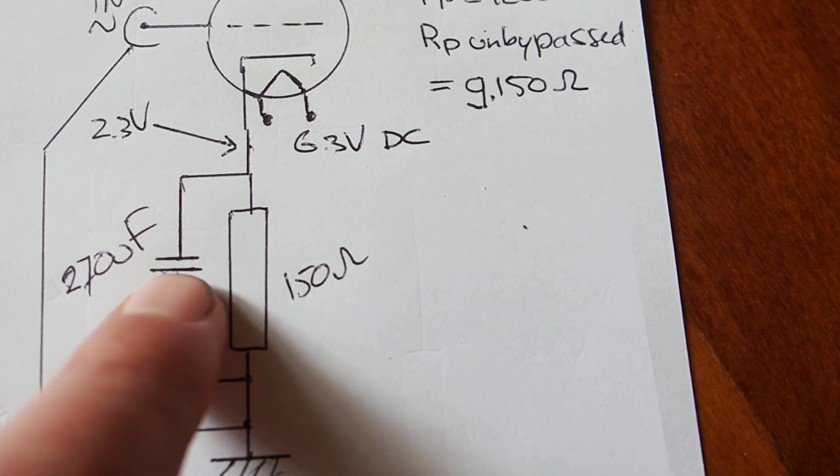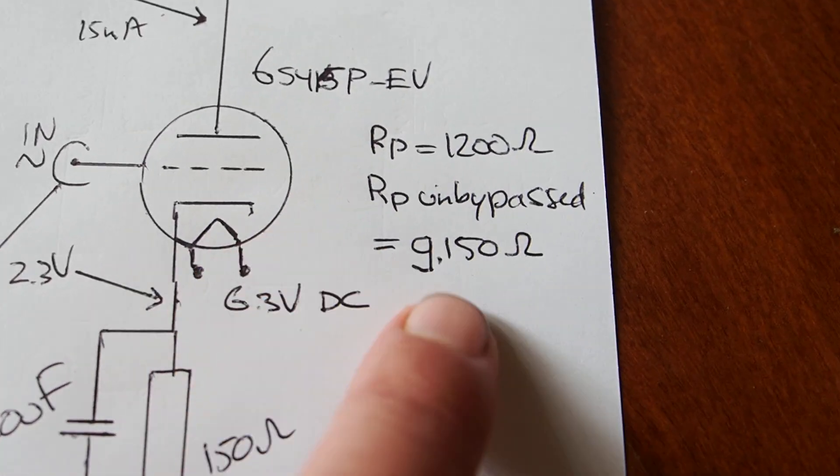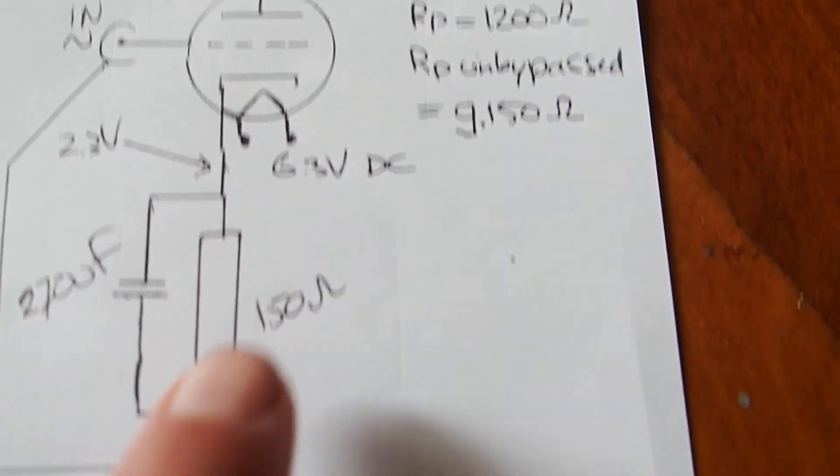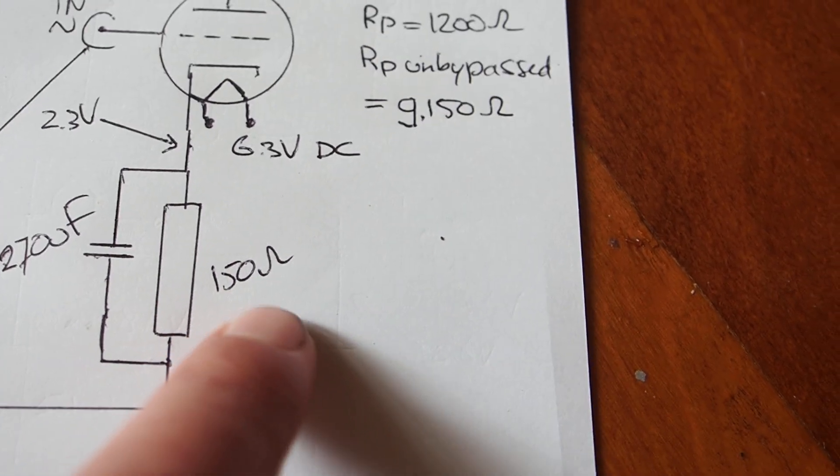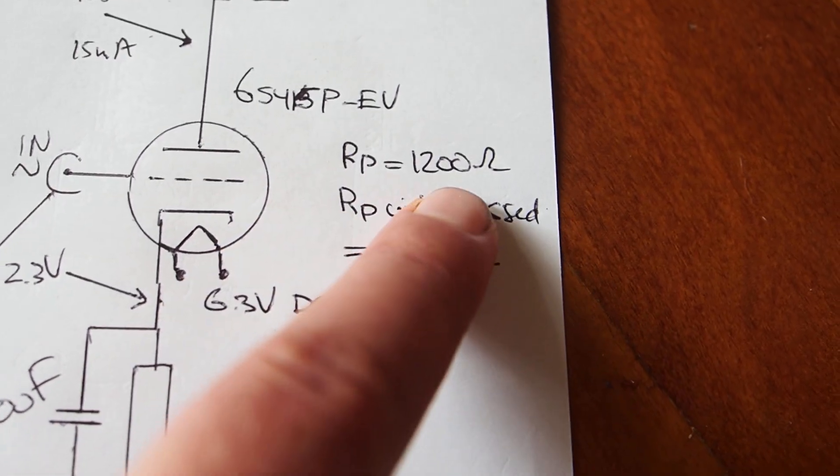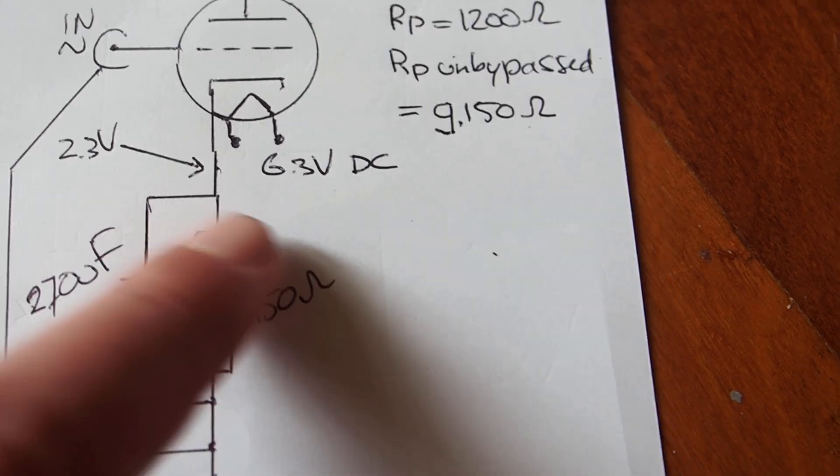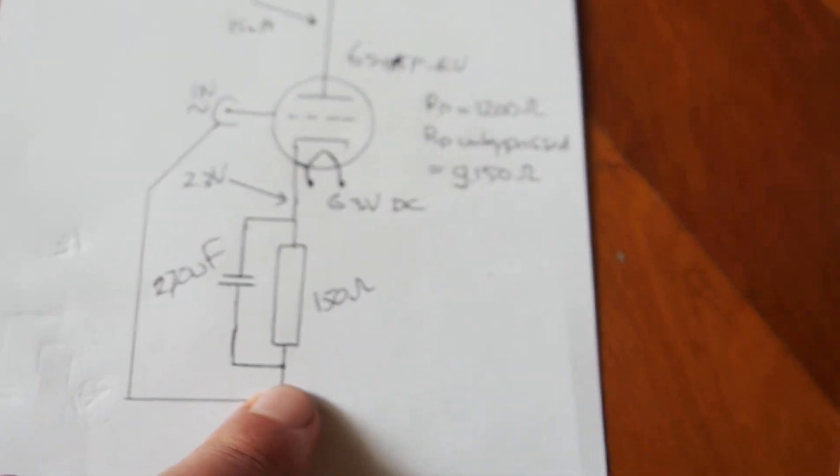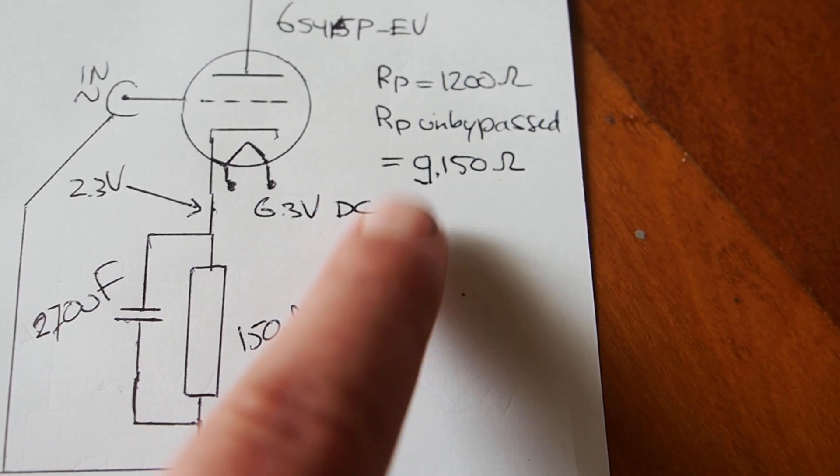Now if we didn't have this bypass capacitor, the plate resistance would actually go up to 9150 ohms. That's because of the high gain of this tube - it actually magnifies the resistor here. You have to multiply it by mu minus one, so that times 51, we have to add that to the 1200 and so we would get 9150. So by actually short-circuiting this with a capacitor so that all the AC signal can go through here, we eliminate the influence of this.